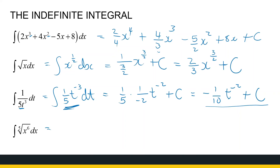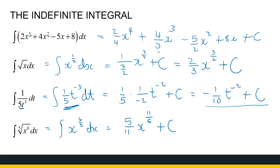For the fifth root, rewrite it as x to the power 6 over 5. Adding 1 — which is 5 over 5 — to 6 over 5 gives 11 over 5. So the integral is 5 over 11 times x to the power 11 over 5 plus c. You can test by differentiating.